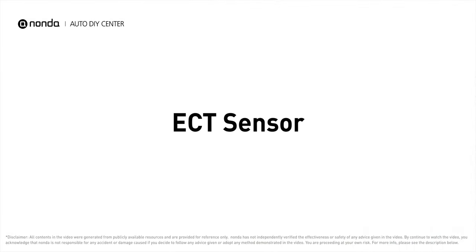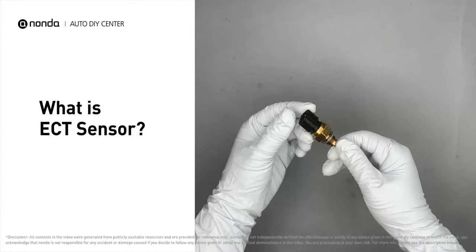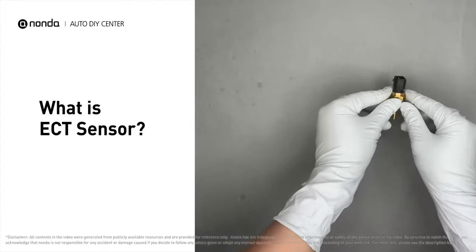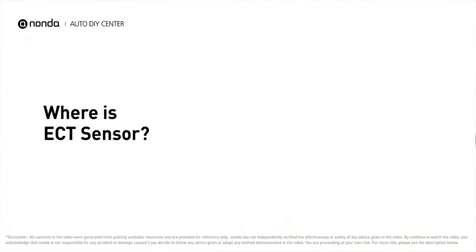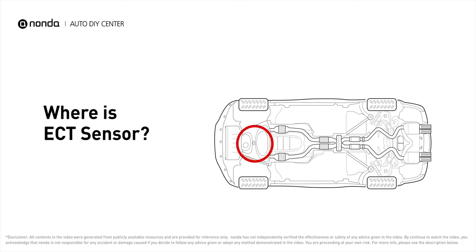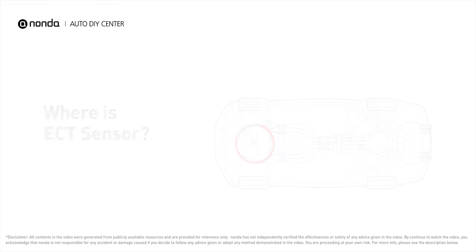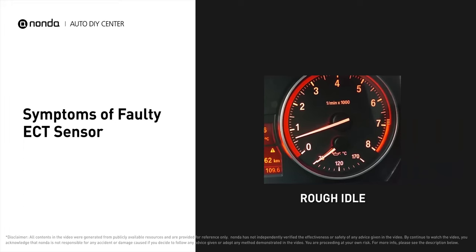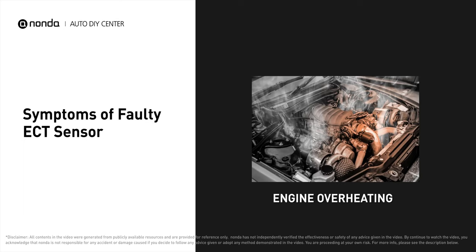The ECT sensor, or engine coolant temperature sensor, is an engine management system sensor used to monitor the temperature of the engine's coolant. The primary ECT sensor is installed near the thermostat in the cylinder head or block, or on the thermostat housing. A faulty ECT sensor can result in a rough idle, trouble starting your car, and engine overheating.